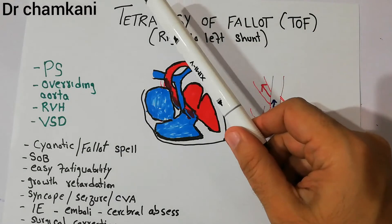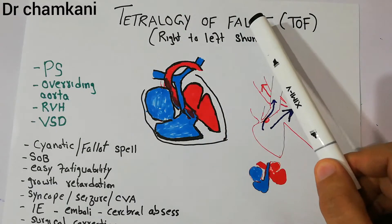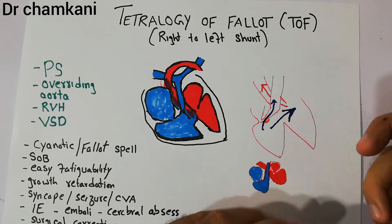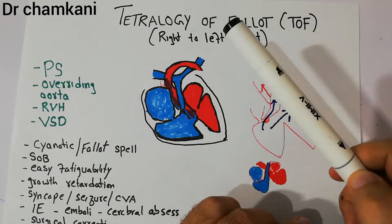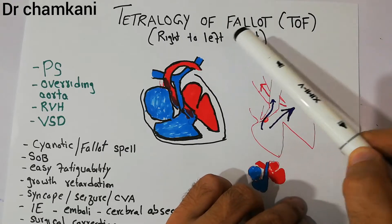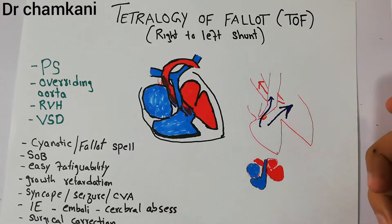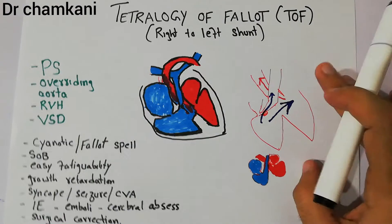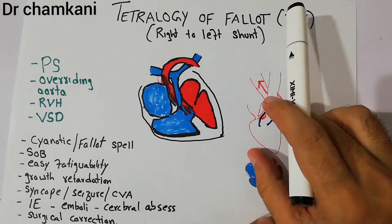Today in this lecture we are going to talk about the Tetralogy of Fallot or TOF. Tetralogy of Fallot is a right-to-left shunt. It is a congenital anomaly, a birth defect in the heart, which is present by birth.